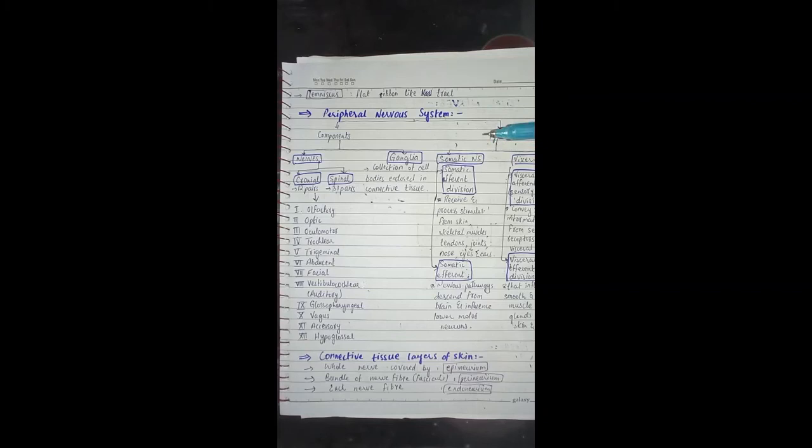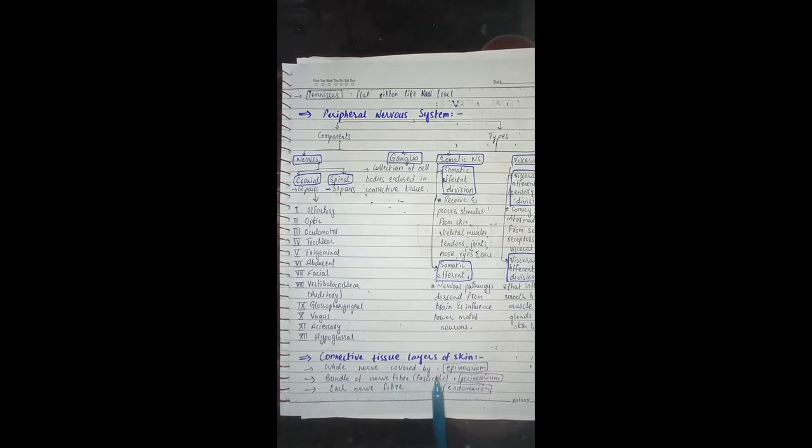The connective tissue layers covering a nerve are: the whole nerve is covered by epineurium, a bundle of nerve fibers is covered by perineurium, and a single nerve fiber is covered by endoneurium.